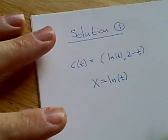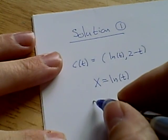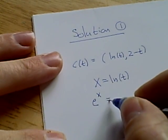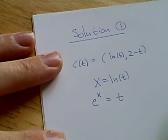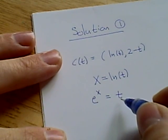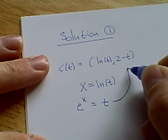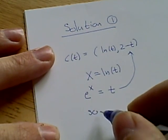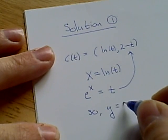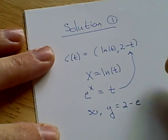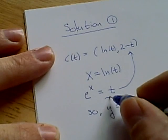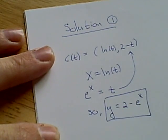We can solve this equation by taking the exponential of both sides. e^x = t. Now that we have a way of expressing t in terms of x, we can substitute this in for y. So y = 2 - e^x. And that's all there is to problem 1.